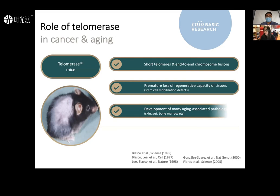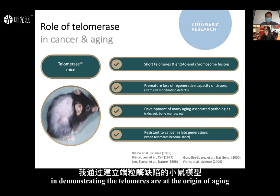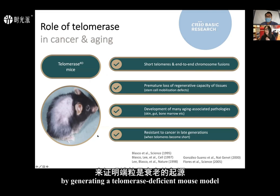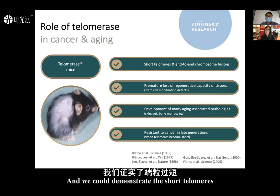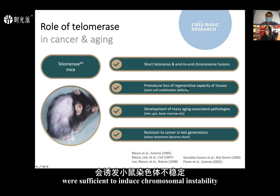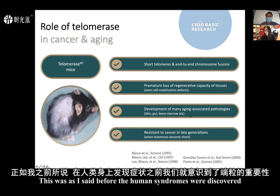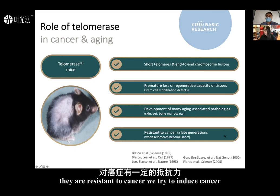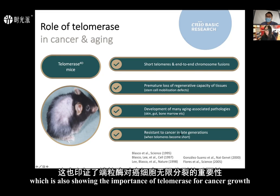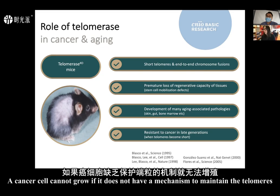I participated with a group led by Carol Greider in demonstrating that telomeres are at the origin of aging by generating a telomerase-deficient mouse model. These mice have abnormally short telomeres, and we demonstrated that short telomeres were sufficient to induce chromosomal instability, loss of regenerative capacity of tissues, and many different degenerative pathologies. Because these mice don't have telomerase, they are also resistant to cancer, showing the importance of telomerase for cancer growth.